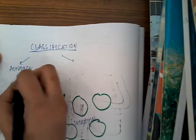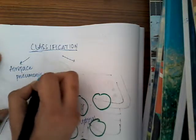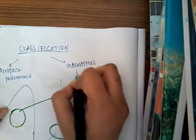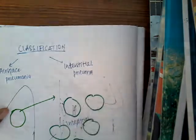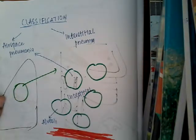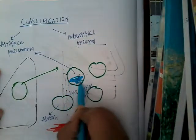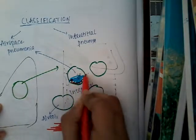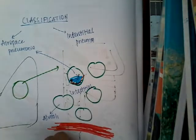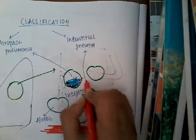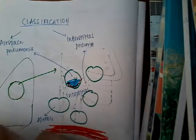The infection can be in the alveoli or in the interstitial space. So we can classify pneumonia as either airspace pneumonia or interstitial pneumonia. Airspace pneumonia is pneumonia in the alveoli — all the inflammatory exudate is in the air spaces, that is in the alveoli. Interstitial pneumonia is when the inflammation is in the interstitium.